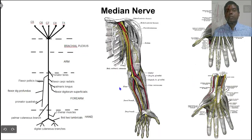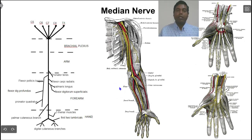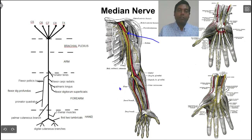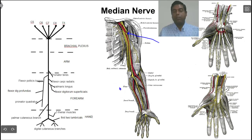Next, the median nerve. The median nerve is formed by contributions from both the lateral cord and medial cord. You can see the contribution from the lateral cord as well as from the medial cord. The median nerve runs along with the brachial artery in the front of the arm, present anterior to the humerus.